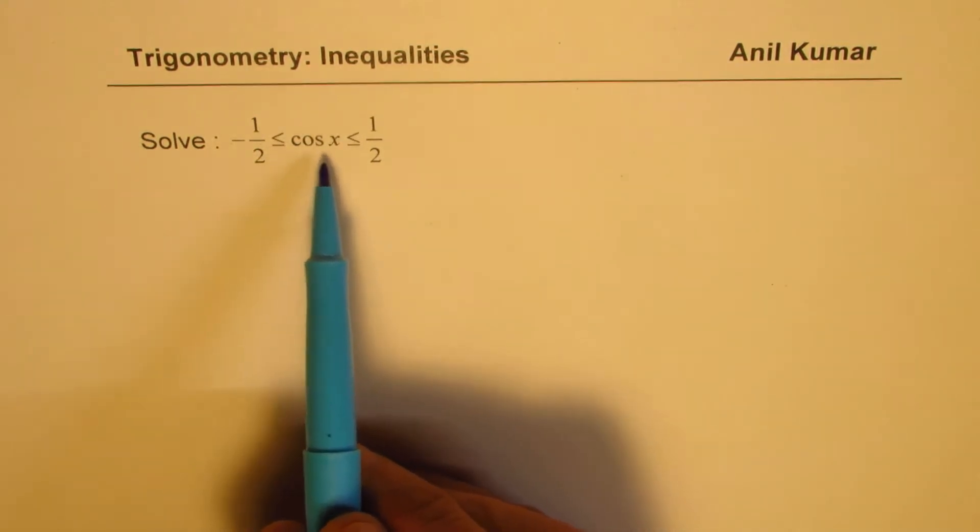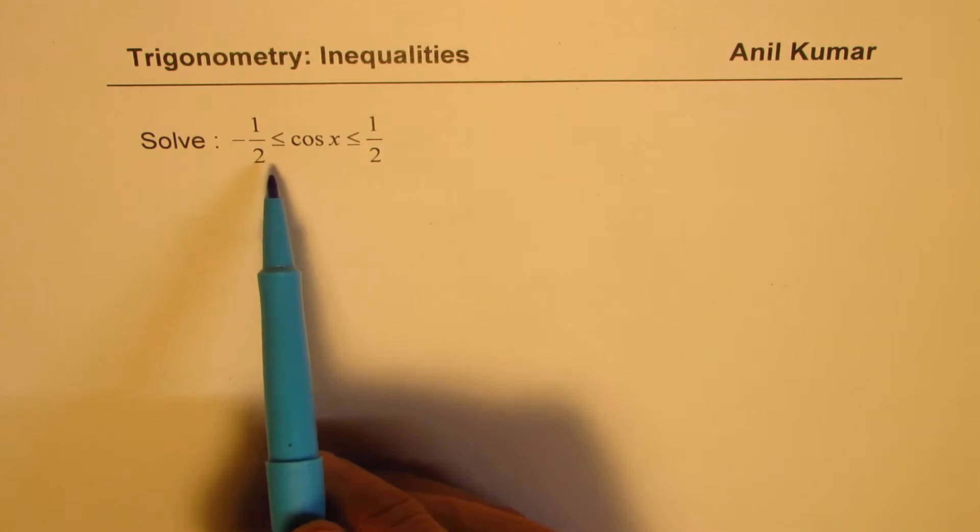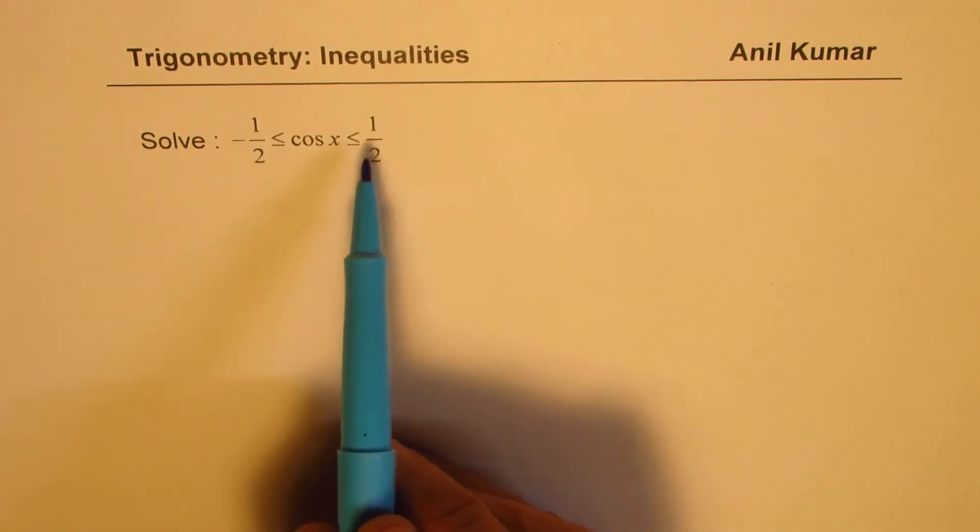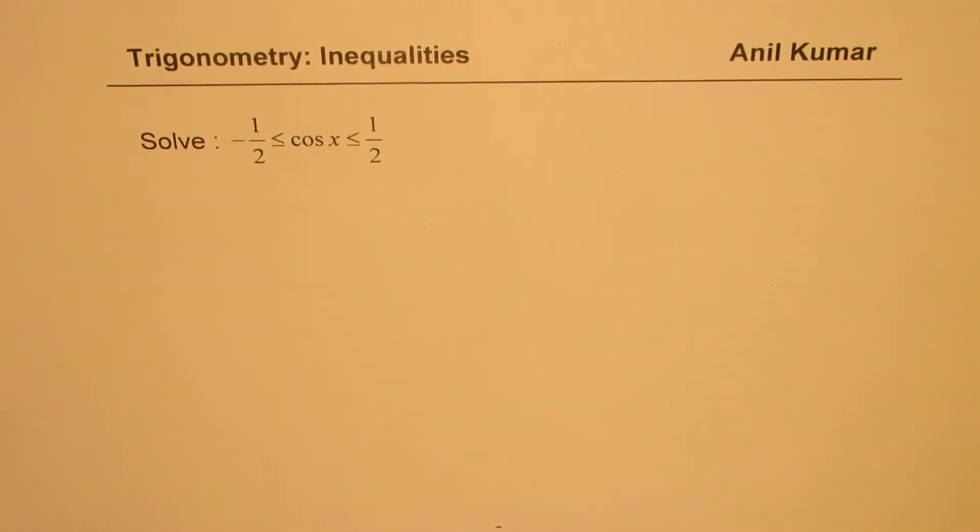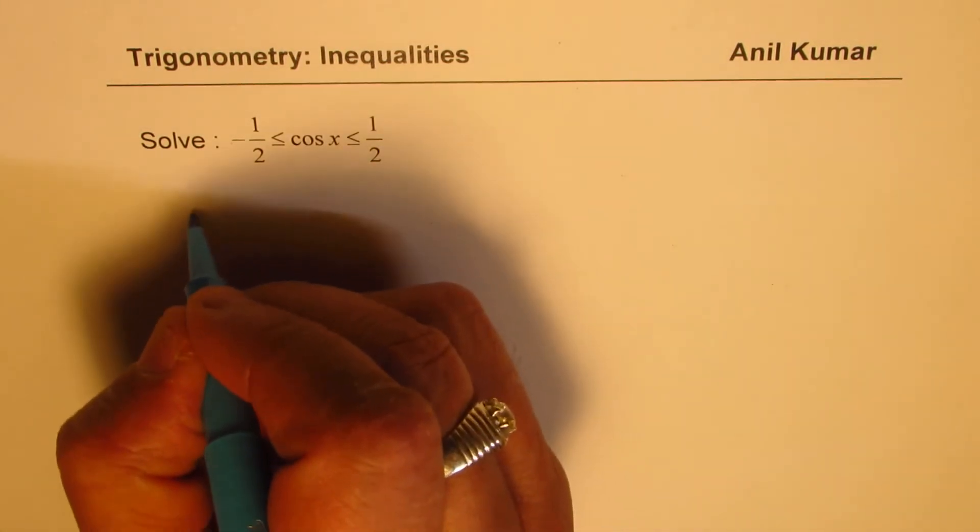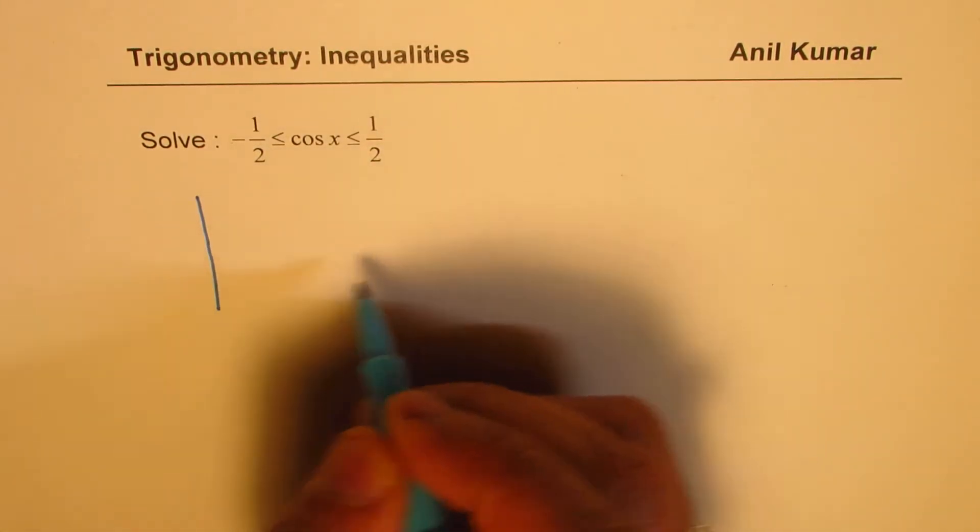Now let us see how to solve this inequality which is cos(x) is greater than or equal to minus half and less than or equal to plus half. To explain the solution, I will take help of two diagrams.